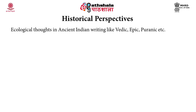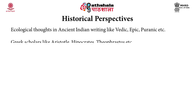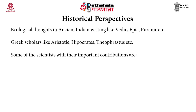From a historical perspective, ecological thoughts were reflected in ancient Indian writings like the Vedic, Epic, and Puranic texts, which describe the importance of vayu (air), jal (water), desha (topography), and kal (time). Greek scholars like Aristotle, Hippocrates, and Theophrastus also described the interrelationship between organisms and their environment.